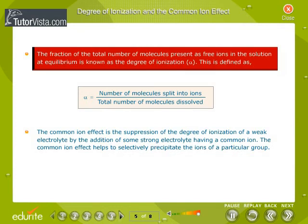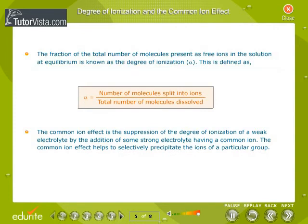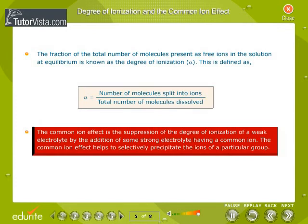The fraction of the total number of molecules present as free ions in the solution at equilibrium is known as the degree of ionization, or alpha. This is defined as alpha equals the number of molecules split into ions divided by the total number of molecules dissolved. The common ion effect is the suppression of the degree of ionization of a weak electrolyte by the addition of some strong electrolyte having a common ion. The common ion effect helps to selectively precipitate the ions of a particular group.